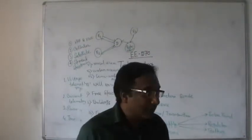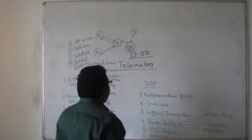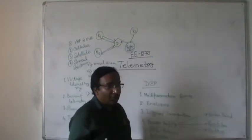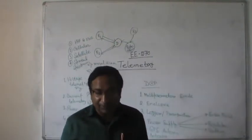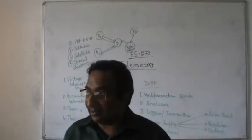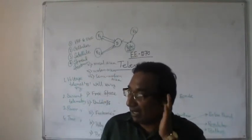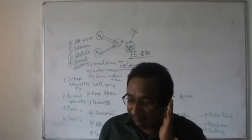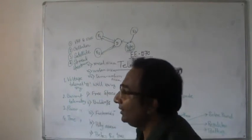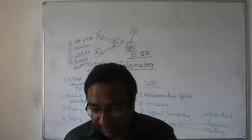Number two is the implementation horizon — that means where we can use all those types of things in a telemetry network, how we can implement them, and where we can implement them.